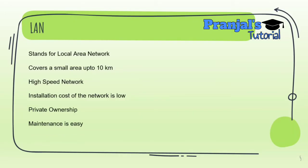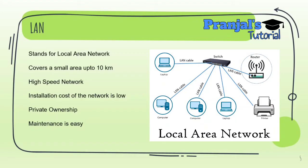The next network is LAN — Local Area Network. This network can cover an area up to 10 km. It is a high-speed network. The installation cost is low compared to other networks. Ownership is private, and it is easy to maintain with a low maintenance cost.